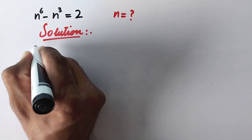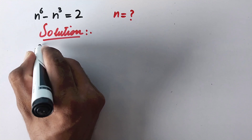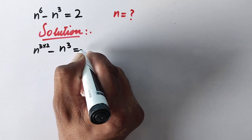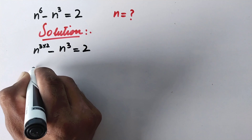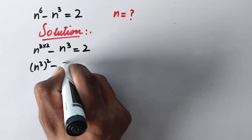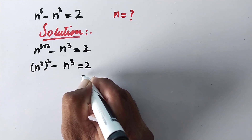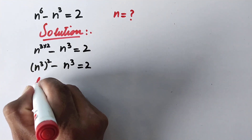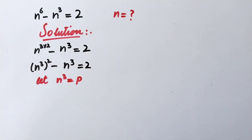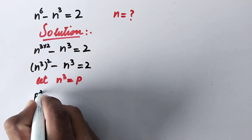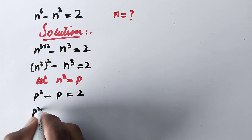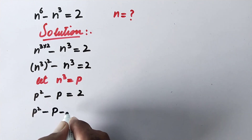In the first step we can write n to the power 6 as n to the power 3, quantity squared. So the equation becomes n to the power 3 squared minus n to the power 3 is equal to 2. Now we let n to the power 3 equal to p, so the equation becomes p squared minus p is equal to 2, or p squared minus p minus 2 equals 0.